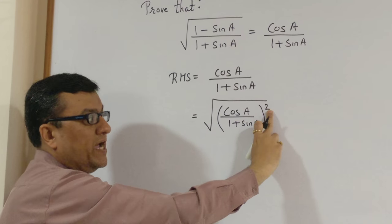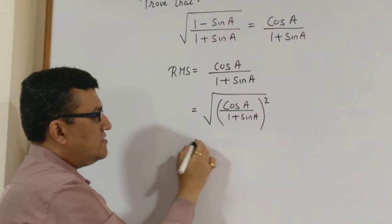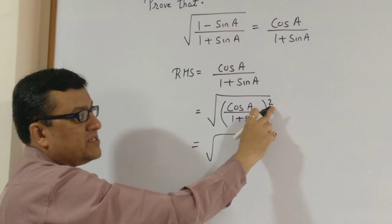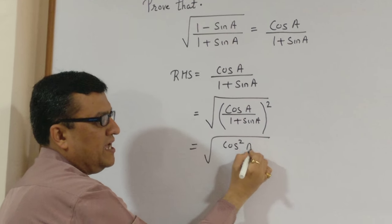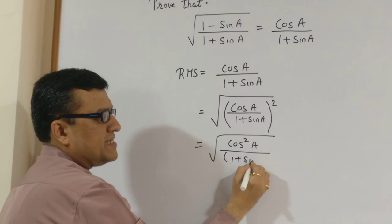Now we split this square into numerator as well as denominator. It is under root of when this square signs get split to numerator and denominator, I shall get cos square A and I shall get 1 plus sine A the whole square.